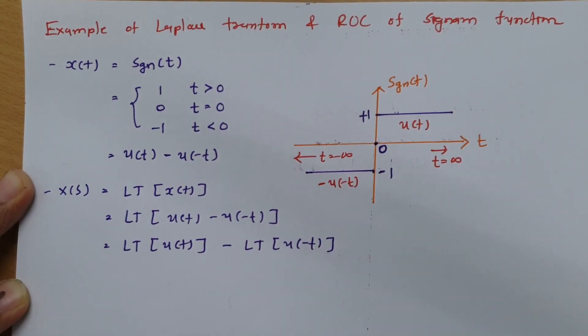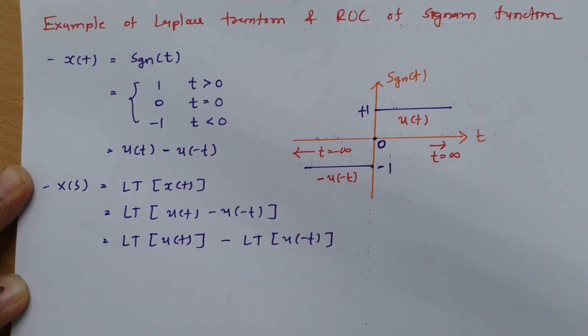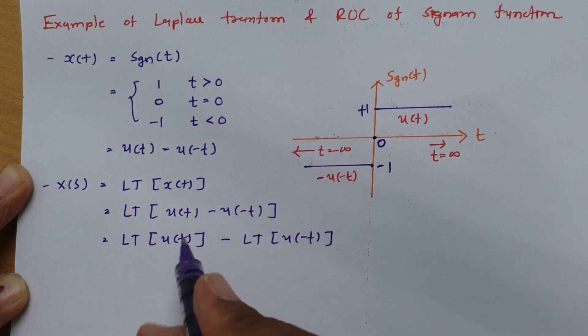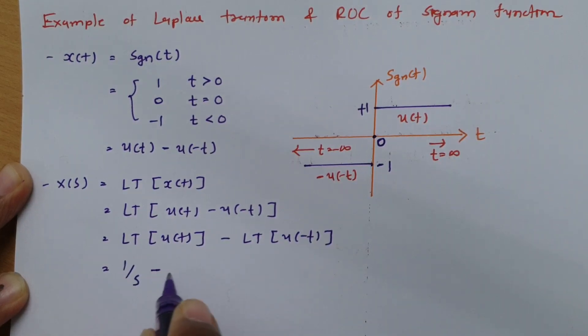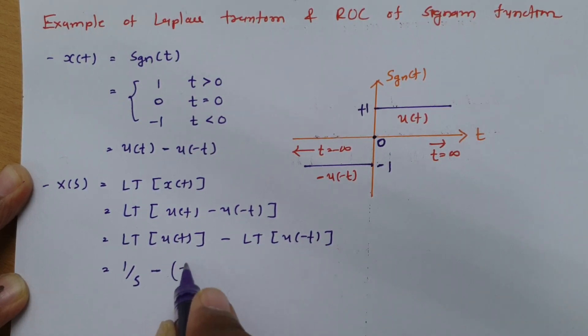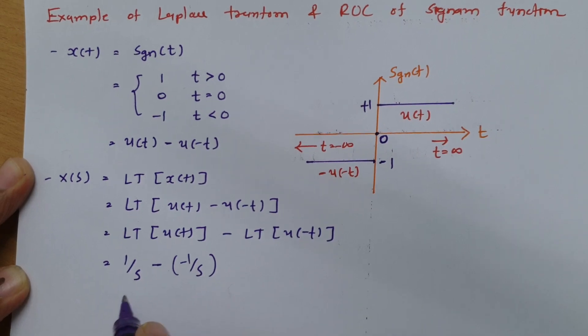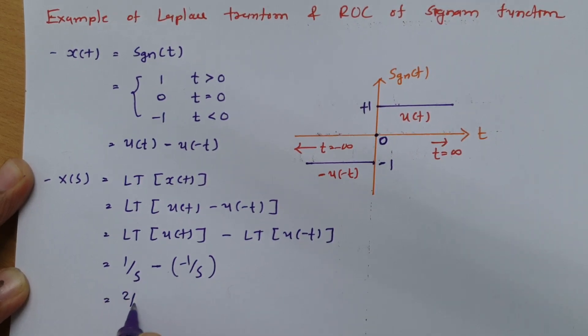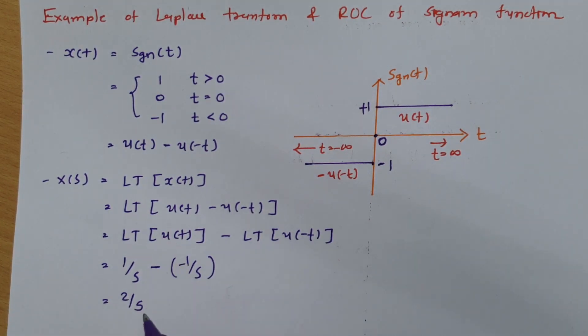Now we already know Laplace transform for u of t that is 1 by s. Laplace transform for u of t that is 1 by s minus Laplace transform for minus u of t that is minus 1 by s. So this minus minus will get plus and this will be now 2 by s. So Laplace transform for signum function that is 2 divided by s.